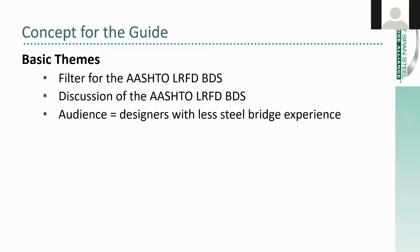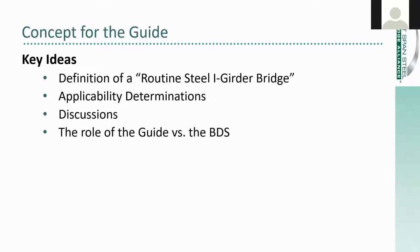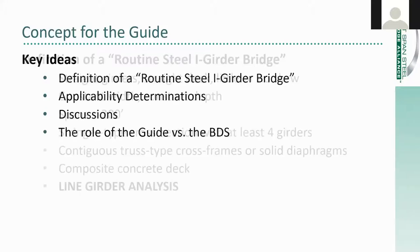It's important to keep in mind the audience for this guide. The guide is expected to be used by designers who are less experienced in the design of steel girder bridges. To understand the guide and how it works, you need to understand a few key concepts, including the definition of a routine steel I-girder bridge, the various applicability determinations used in the guide, and the discussions that are in the guide. Before going through those, I want to make it very clear that the guide is not meant to replace the AASHTO LRFD BDS — it's meant to be a supplement. The intent is that a designer would have both the guide and the BDS open side by side.